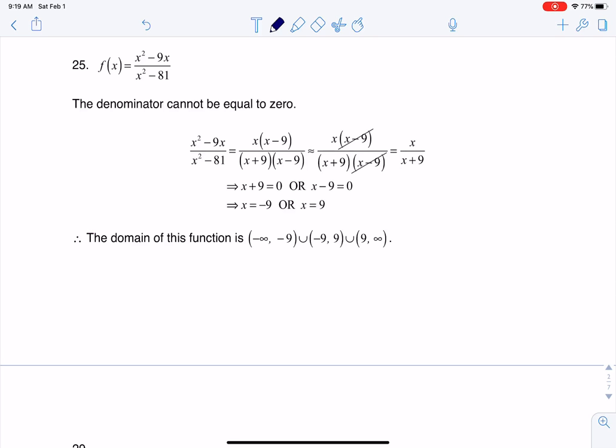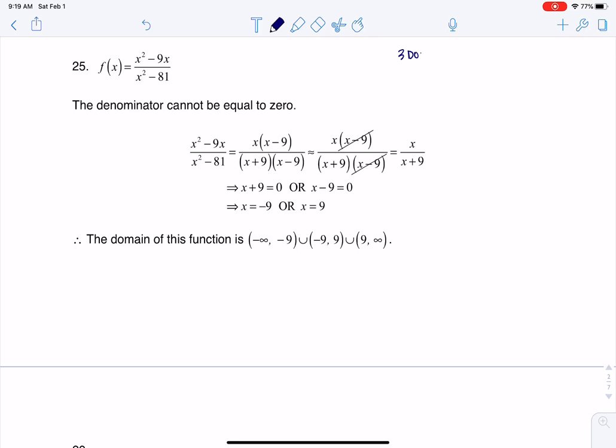You'll hear me repeat this a lot, but there are always three domain issues in math. The first one is when we have fractions where the denominator is zero. The second domain issue is when we have radicals with an even index and a negative radicand. And the third one is when we have logarithms where the argument is zero or negative.